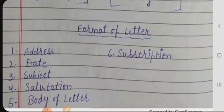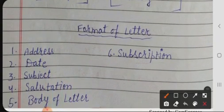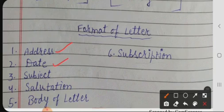This is the format of a letter. First of all, you will write the address, then the date — you have to write the date in a proper format. After that, you write the subject and then the salutation. In the subject line you write a title that summarizes the content of your letter.